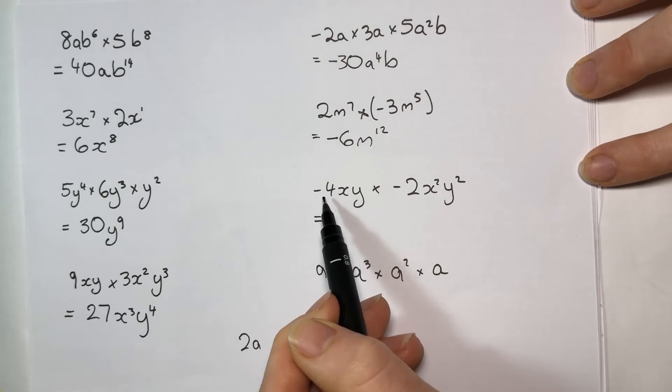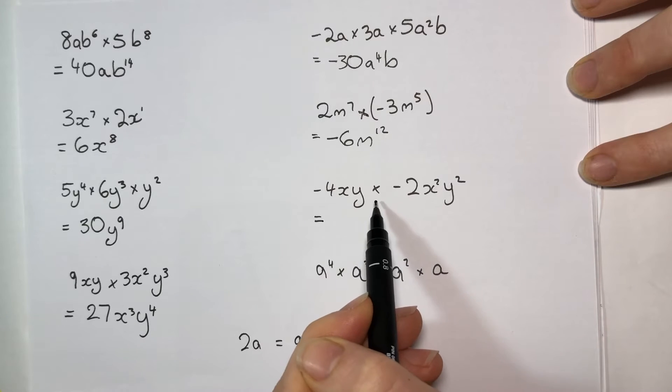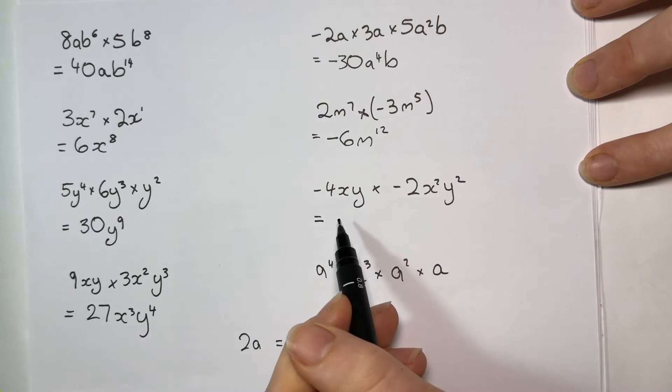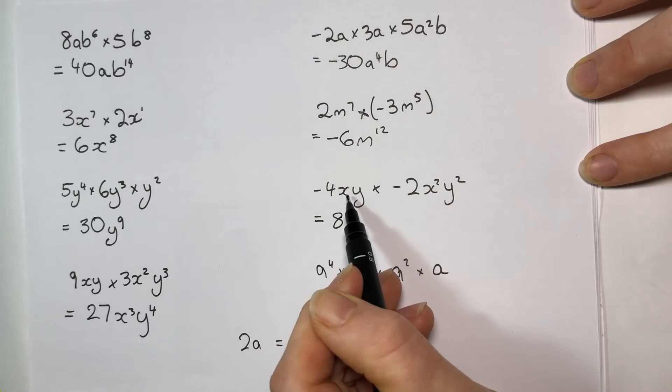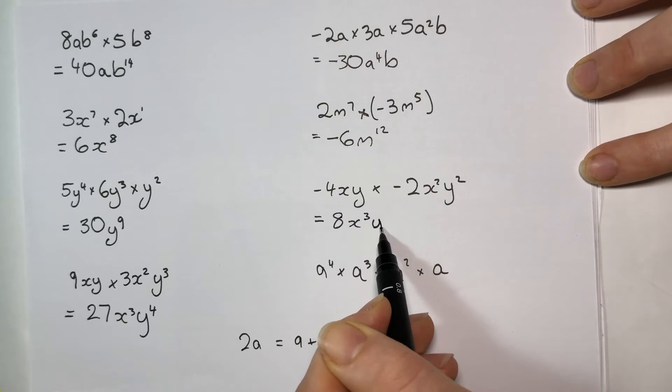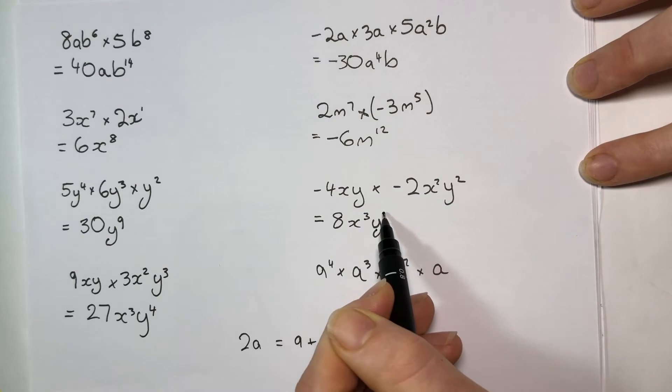Here, I've got an example of a minus number times another minus number, there's my action there, so this is just a negative. Negative times a negative makes a positive and 4 times 2 is 8. An x here, an x squared there, so a cube all together, and a y there and a y squared there, so a cube again.